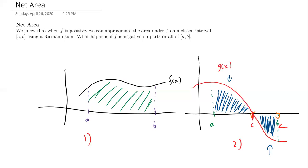The only thing that will be different is that even though area is positive by definition, whatever is below the x-axis we're going to take the negative of it. So if the area between c and b is seven, because it's below the x-axis we're going to call it negative seven — we take the negative of the area.